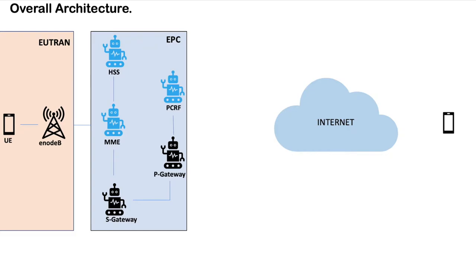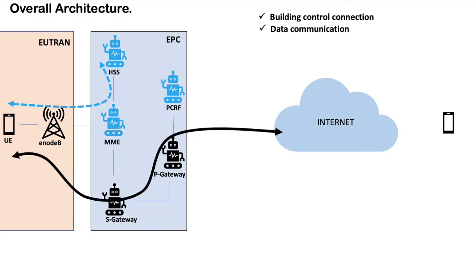The overall 4G network is divided into three parts: U-Tran or radio network, EPC or evolved packet core, and the internet. From the time you turn on your mobile phone till the time the data connection starts, the whole communication happens in two phases. The first phase is the control session setup where the mobile subscriber's identity, security parameters, and user profile are checked and validated. The second phase is data connection setup where the mobile device is granted access to the internet or the call network. We have many different components involved in this architecture and we'll see a brief intro of each in the coming sections.